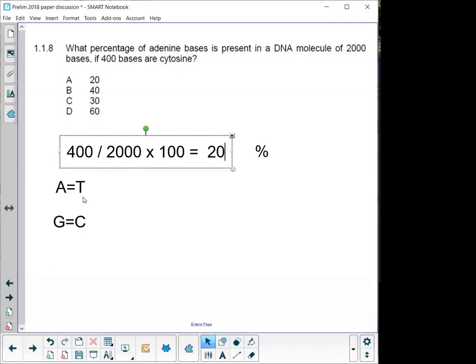20% is adenine. So, another 20% is going to be thymine. So, that's going to take 40% of the total amount of what is in the DNA. So, what is left is 60%. And that has to be split equally between guanine and cytosine. So, the correct answer in this case is C, 30%. 30% is going to be guanine. 30% is going to be cytosine.